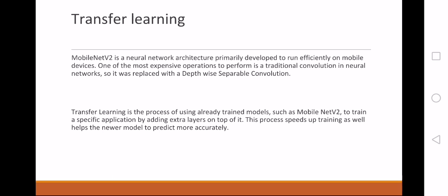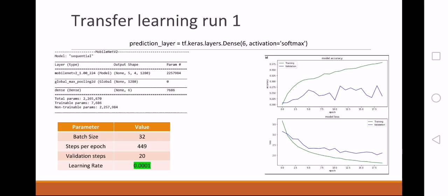First, we used transfer learning as a base model. We used MobileNet V2, a neural network architecture that was primarily developed to run on mobile devices. Transfer learning is the process of using already trained models for prediction. In this case, we freeze all the networks, and the final prediction layer, we change it for the number of classes that we have with the activation softmax, and we change the learning rate.